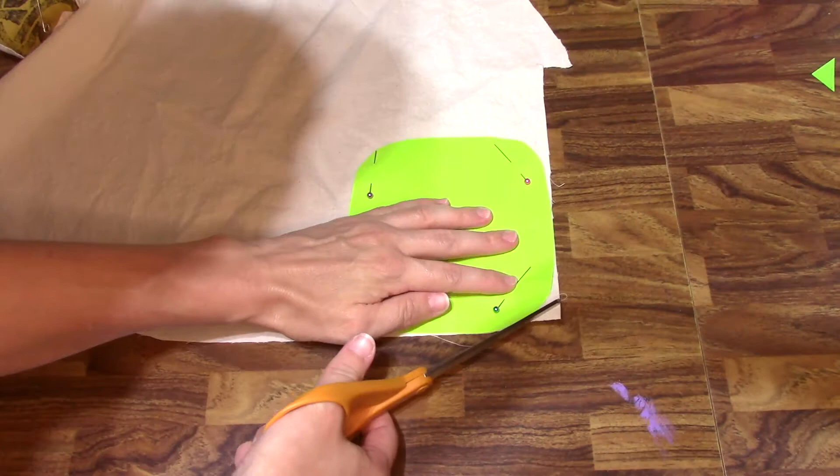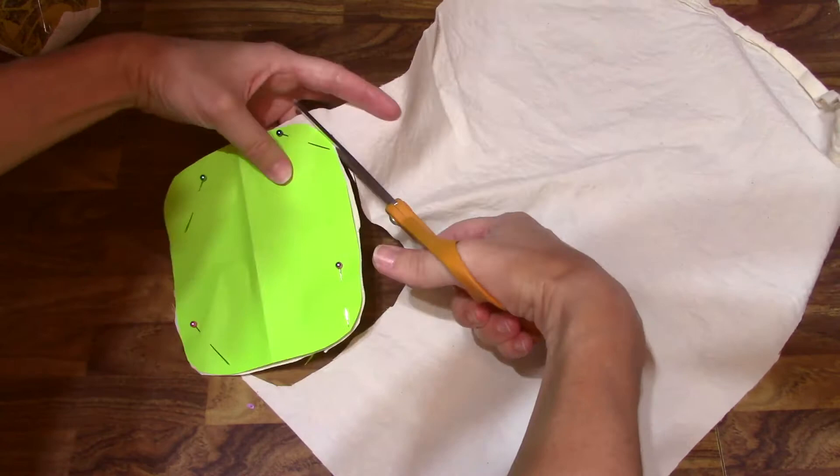I'm beginning by cutting out the larger bow piece. You will need one for the front and one piece for the back. You can use two different fabrics, but for this example I'm using the same fabric for both sides.